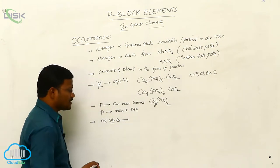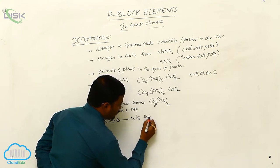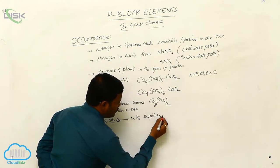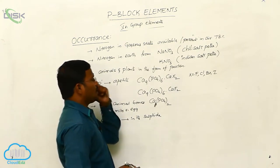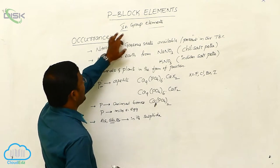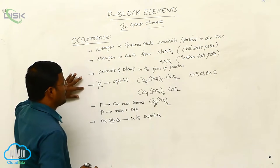These three elements are available in its sulfide form. This is occurrence or availability of 5A group elements. The most important elements are first two, they are nitrogen and phosphorous.